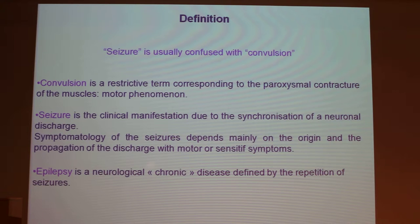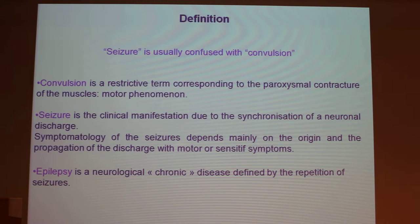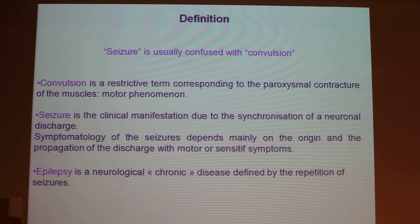Just a few words about definitions, but it is very important. Seizure is usually confused with convulsion. Convulsion is a restrictive term corresponding to the paroxysmal contracture of the muscles — it is a motor phenomenon. Seizure is the clinical manifestation due to the synchronization of a neuronal discharge. Symptomatology depends mainly on the origin and propagation of the discharge, with motor or sensitive symptoms, and it is very important to know where the propagation occurs.